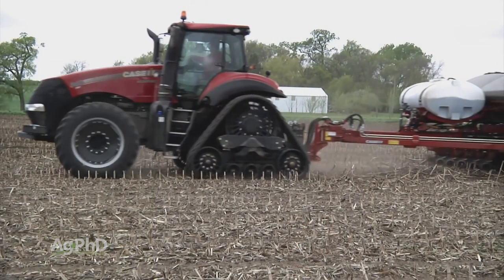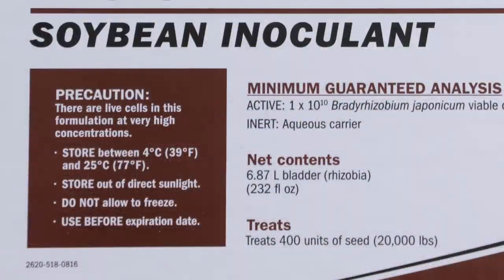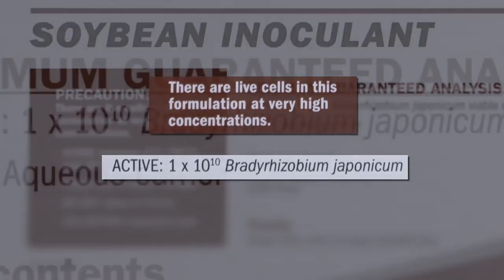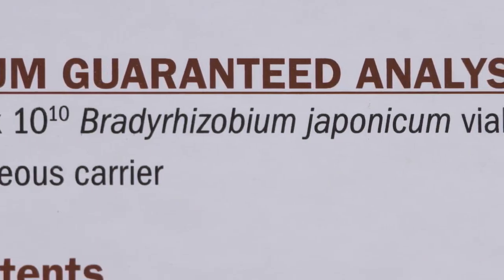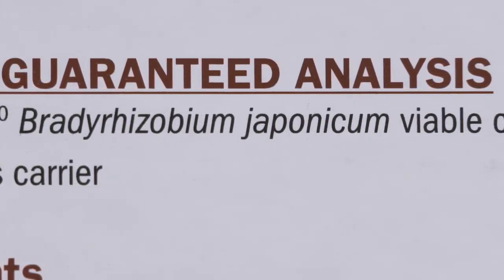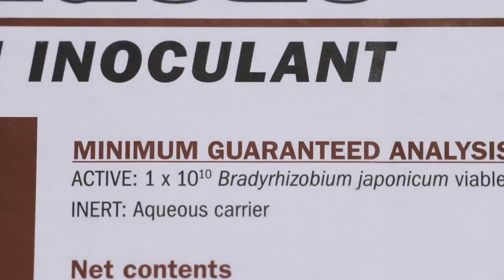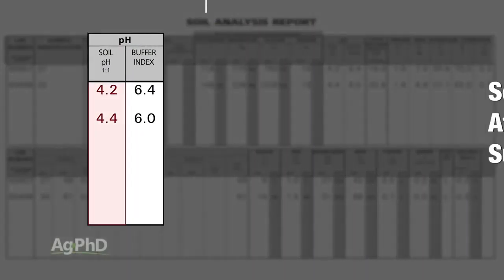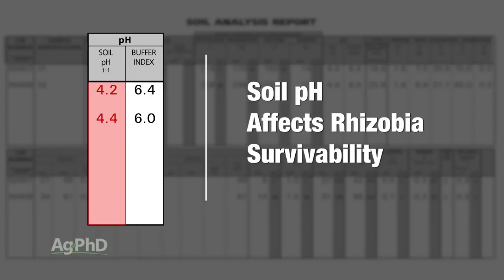One way to get more nodulation is by adding more bacteria to the soil through inoculation. All soybean inoculant is live rhizobia bacteria, and in many cases specific strains that are very efficient at converting nitrogen from the air into a form the plant can use. We really encourage you in all cases — even if you're raising continuous soybeans — to inoculate your soybeans. Two things that could go wrong: if you've got a wacky soil pH, you're not going to have very good survival of those bacteria, and that could lead to poor nodulation.